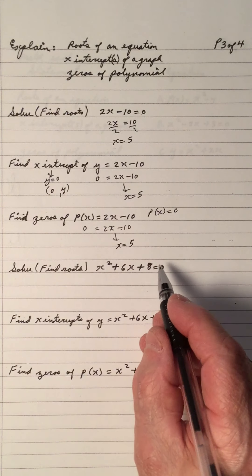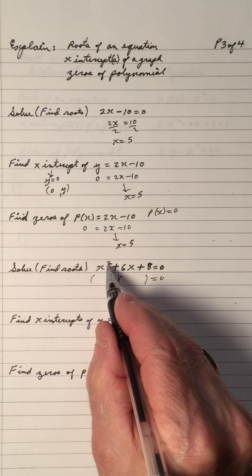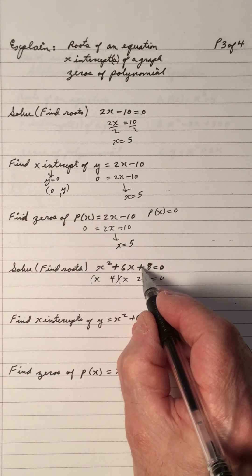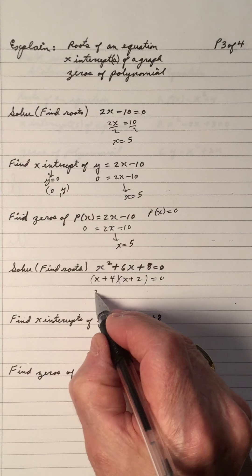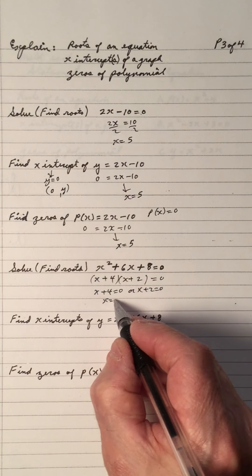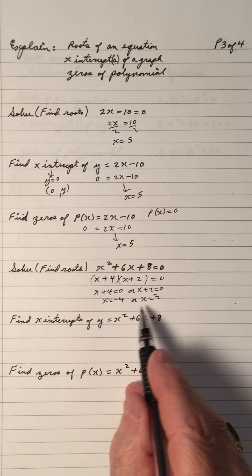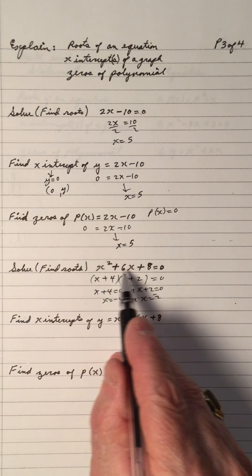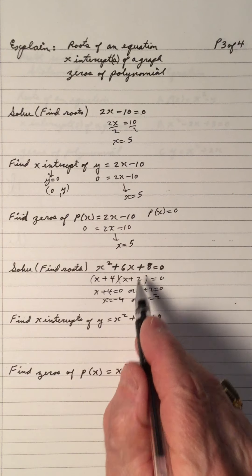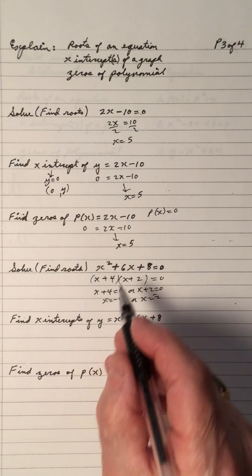Solve — find the roots of this equation. Notice it's already equal to zero, so we factor. It's a quadratic: X squared factors as X and X. Factors of 8 that give a sum of 6 are 4 and 2. Product is positive 8, sum is positive, so positive 4 and positive 2. So X plus 4 equals zero, or X plus 2 equals zero — giving X equals negative 4, or X equals negative 2. A quadratic normally has two roots, and here they are.